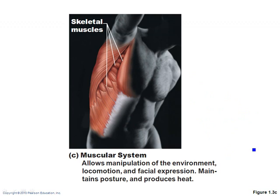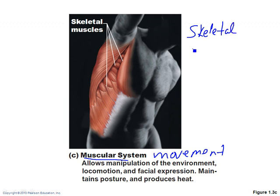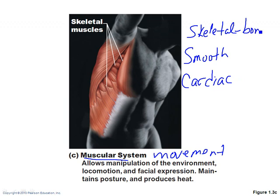The muscular system — or skeletal muscle — is for movement. Not just locomotion, but different kinds of movement. You have three types of muscle: skeletal muscle, smooth muscle, and cardiac muscle. Skeletal muscle moves bones — that's how you walk, pick things up, or move your jaw.